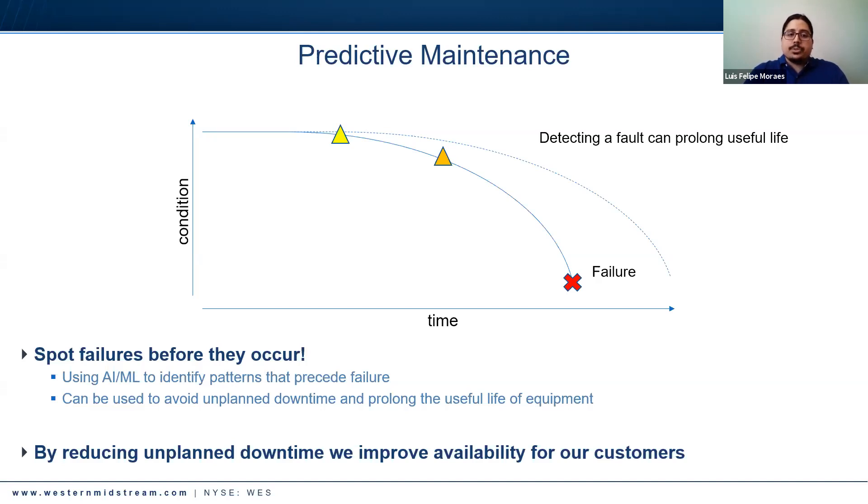By doing that we can also improve our availability. If a piece of equipment is causing issues, we might need to bring down a facility or some portion of that pipeline network. That unplanned downtime affects availability. If we can predict when failures are most likely to occur, we can plan our downtime and work around it, essentially not affecting availability.